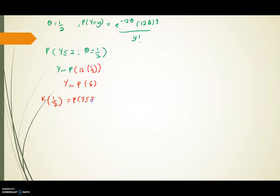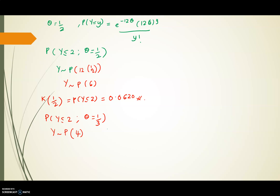For K(1/2), we compute P(Y ≤ 2) using lambda = 6. From the Poisson cumulative probability distribution table, we get K(1/2) = 0.0620. For theta = 1/3, Y ~ Poisson(12 * 1/3) = Poisson(4). From the stats table, P(Y ≤ 2) with lambda = 4 gives K(1/3) = 0.2381.